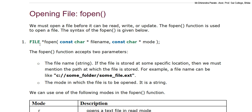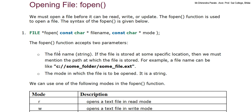First of all, FILE is a data type. Then we need to call fopen, which is our function. The first parameter is a constant character file name — here we will give the entire file path. Then in the second parameter we will enter the mode. There are different types of modes like read mode and write mode. The fopen function has two types of parameters: the file name, which we put in string format, with the full path if the file is stored at a specific location — for example, C:\some_folder\some_file.extension. The second parameter is the mode in which the file is to be opened, which is also a string.